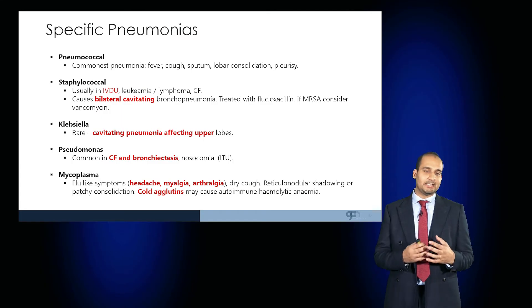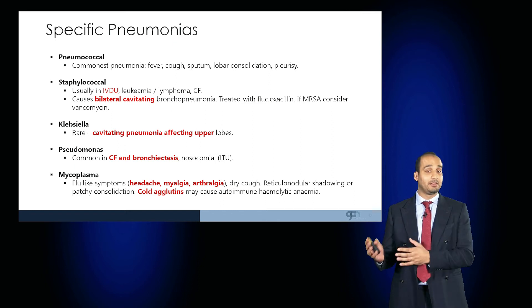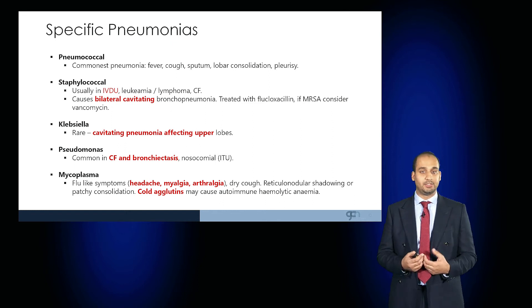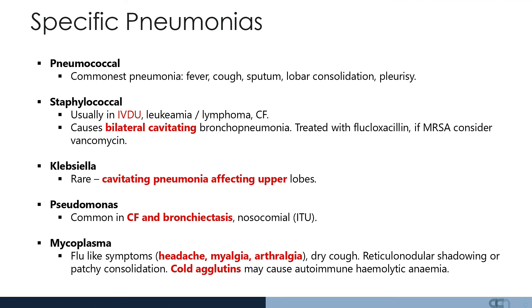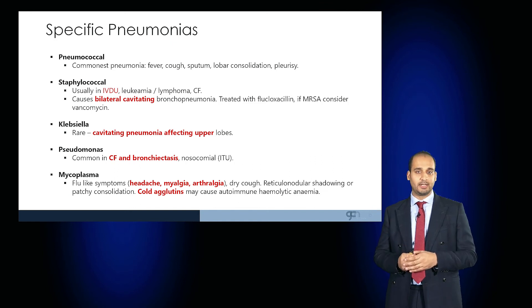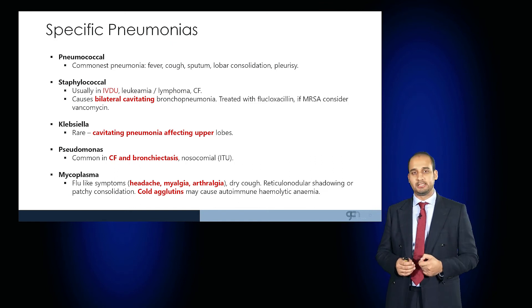Moreover, this classification usually results in typical clinical features. Pneumococcal infections, which are the commonest cause of pneumonia, result in the classic symptoms of fever, cough, sputum, lobar consolidation and pleurisy. Staphylococcal pneumonias are usually seen in immunosuppressed patients and those taking intravenous drugs, and can cause very severe bilateral cavitating bronchopneumonias, usually requiring treatment with high-dose intravenous flucloxacillin. If the patient has methicillin-resistant Staphylococcus aureus, a change in antibiotics to something like vancomycin may be required.